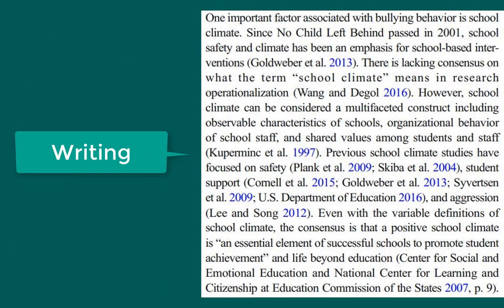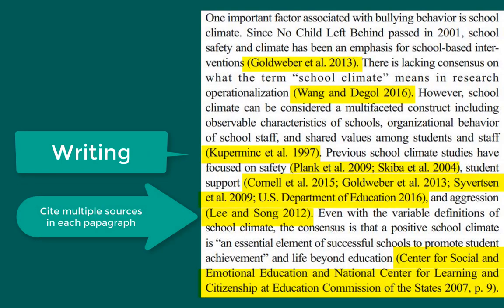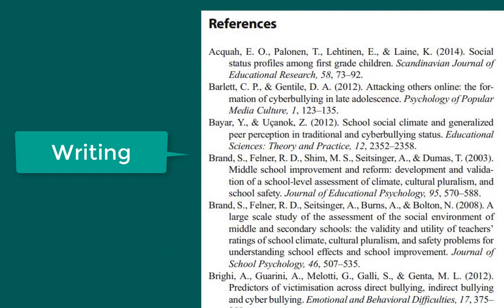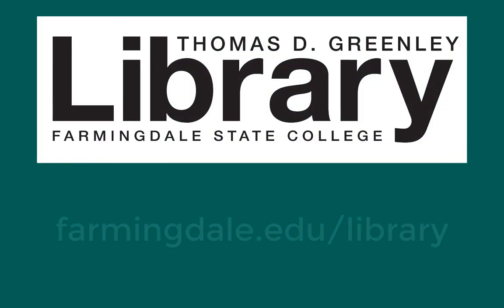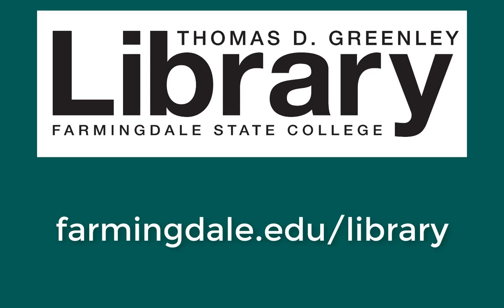One tip to help you make sure you are synthesizing and analyzing the information is to cite multiple sources in each paragraph, showing relationships between them. In addition to in-text citations, which should appear throughout the literature review each time you refer to a source, full citations should also be listed at the end of the paper. This was an overview of how to create a literature review. Please don't hesitate to contact us for additional assistance.